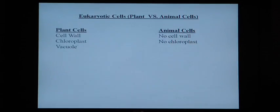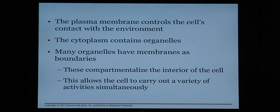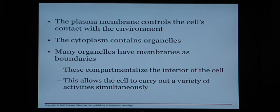Let's focus in on the plasma membrane a bit more. The plasma membrane controls the cell's contact with the environment — it is very picky and choosy about what it lets into the cell and what it lets go out. This is important because we don't want toxins, bacteria, or other harmful things to get in easily. The plasma membrane is the cell's first line of defense, controlling all contact with the environment.